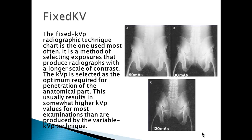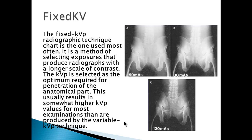If you take a look at these three images here — A, B, and C — you have 50 mAs, 80 mAs, and 120 mAs, but the KV remains the same. One of the advantages of having a fixed KV approach is that the density is much easier to control. If you remember, you double the mAs, you will double the dose as well as double the density.